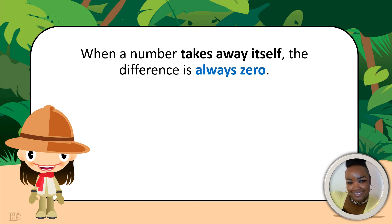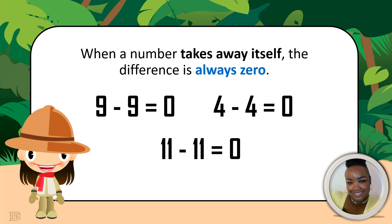When a number takes away itself, the difference is always 0. Here are some examples: 9 take away 9 equals 0. 4 take away 4 equals 0. 11 take away 11 equals 0. Always remember that a number when taking away itself is left with 0. Here are some more examples.